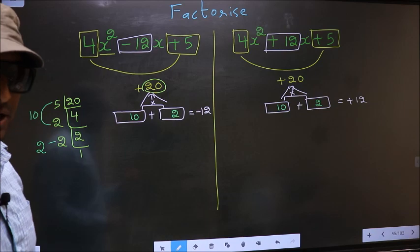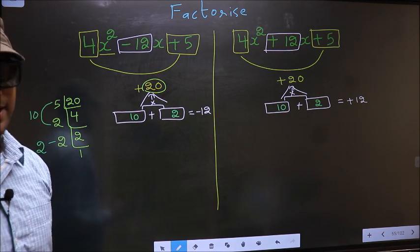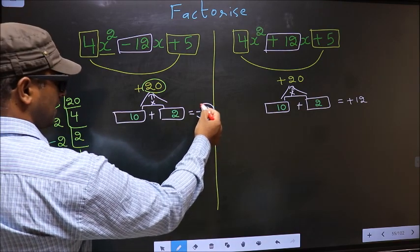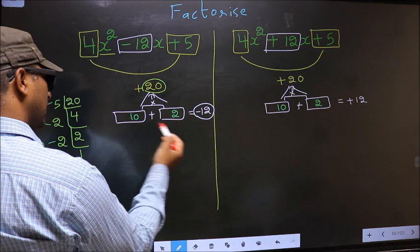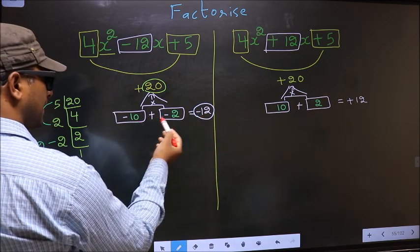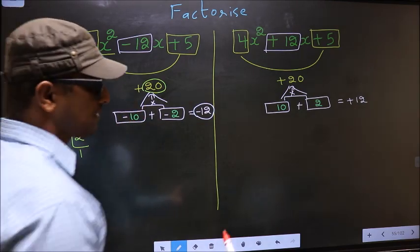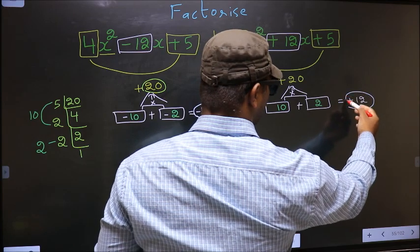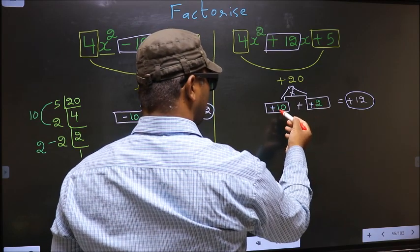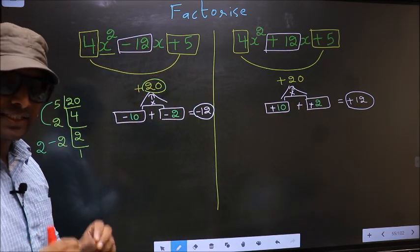Now we should adjust the signs. The difference between the two comes while adjusting the signs. For the first expression, we should get minus 12. To get minus 12, I place negative on both: minus 10 minus 2 is minus 12, and minus 10 into minus 2 is plus 20. So we have adjusted the signs here. For the second expression, we should get plus 12. To get plus 12, here I put plus and here also plus. Plus 10 plus 2 is plus 12, and plus 10 into plus 2 is plus 20. So we have adjusted the signs.